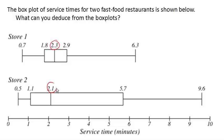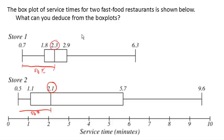The middle bar represents the median — the score that divides the data in half. Store two has a smaller median, which means 50% of the time you're served in under 2.3 minutes at store one, and 50% of the time you're served in under 2.1 minutes at store two. So by some measure of average, store two seems to serve a little bit faster.